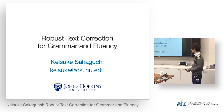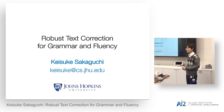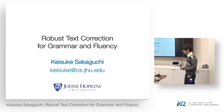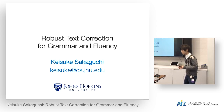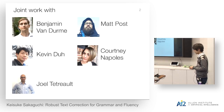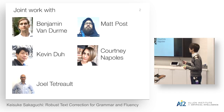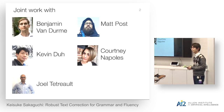I'm Keisuke from Johns Hopkins, and thank you for having me today. I'm very excited to be here at AI2, and also excited to talk about my research titled 'Robust Text Correction for Grammar and Fluency.' This is joint work with my advisors Ben Van Dermen and Matt Post, and collaborators Kevin Liu, Courtney Polis, and Joel Tetrault.